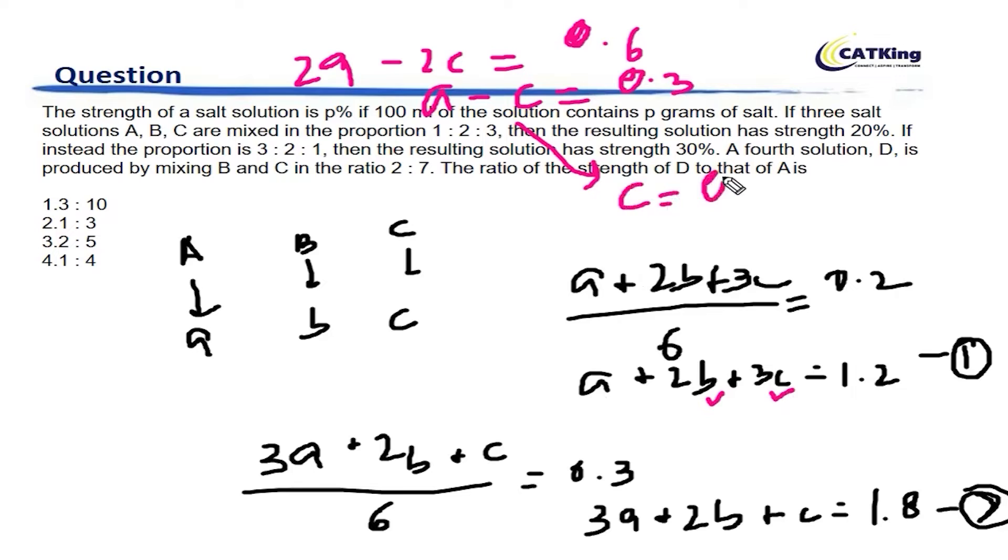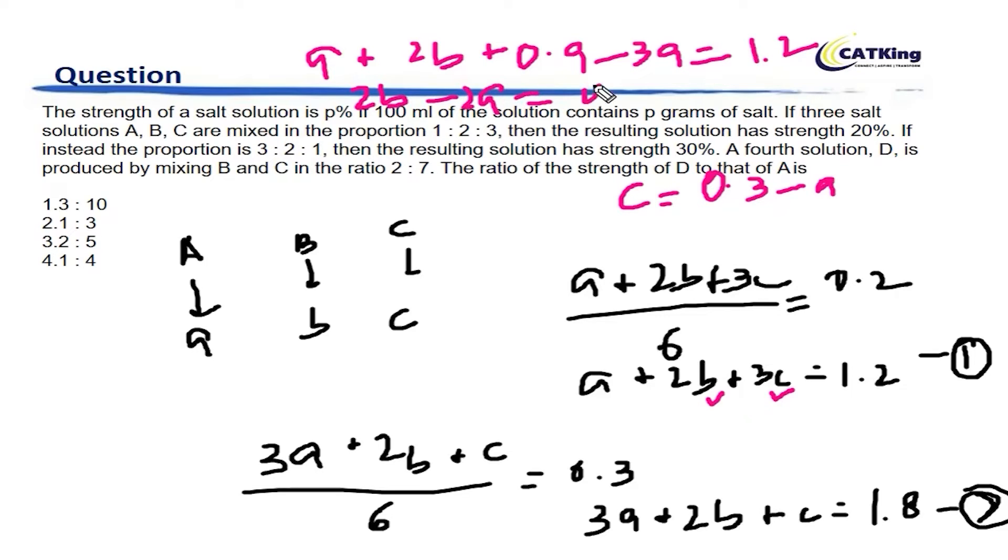C will become 0.3 minus A. Let's find out B also in terms of A. What we have to do is substitute C here. This becomes A plus 2B plus 3C becomes 0.9 minus 3A is equal to 1.2. Now if you have a look at this, this becomes 2B and minus 2A is equal to 1.2 minus 0.9 is 0.3. So B becomes A plus 0.15.